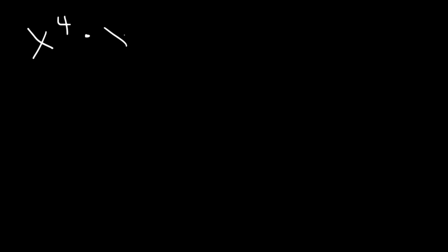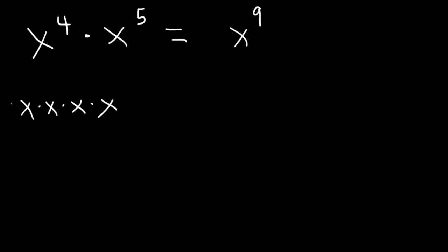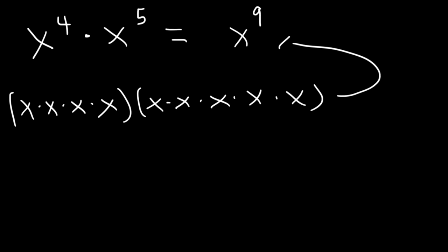What is x to the 4th multiplied by x to the 5th? Whenever you multiply by a common base, you need to add the exponents. 4 plus 5 is 9. x to the 4th is basically multiplying 4 x variables together, and x to the 5th is equivalent to multiplying 5 x variables together. So in total, you're multiplying 9 x variables together, and that's why it's equal to x to the 9th.